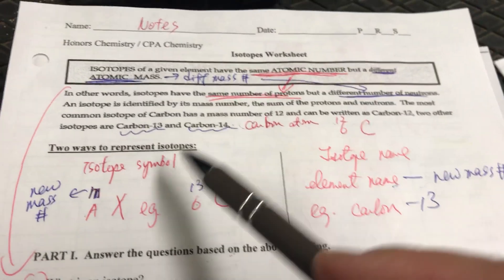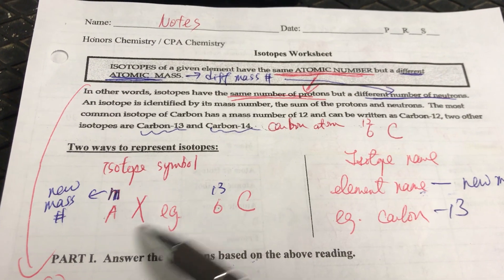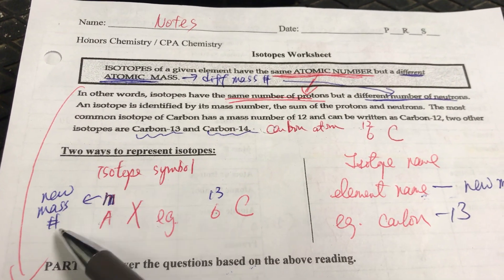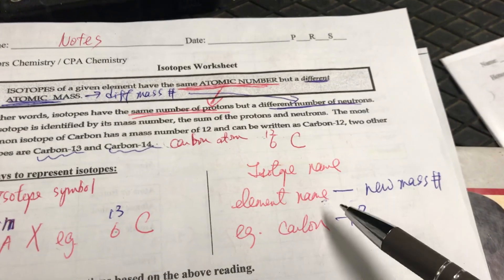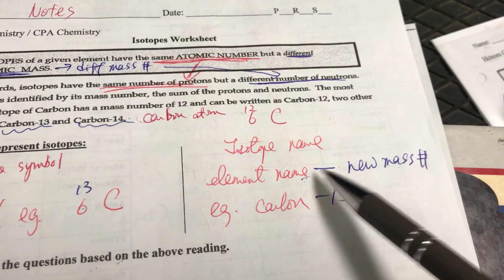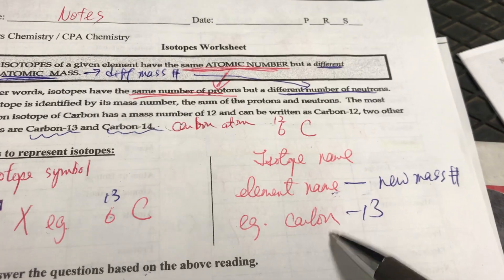So we have two ways to represent isotopes. One is the symbol, so mass number A on top, atomic number Z on bottom, and X for the element. For example, 13, 6-C—13 is the mass number. The other way to represent is the name, so the format is element hyphen mass number. So for example, carbon-13.